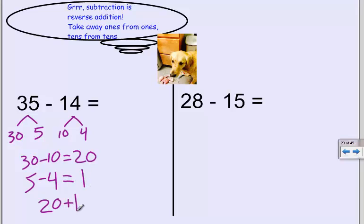So I then add both my differences. 20 and one are my differences. So 20 plus one is 21. And that means 14 is 21 numbers away from 35. That's the difference.